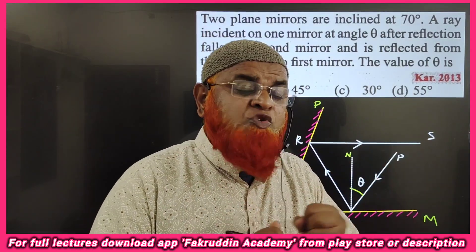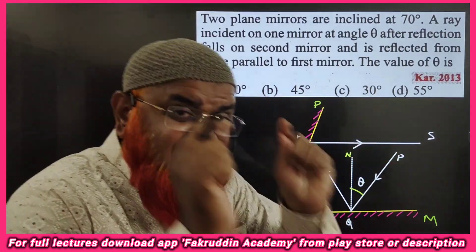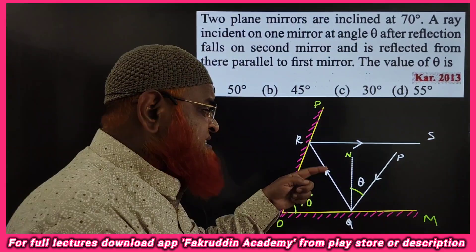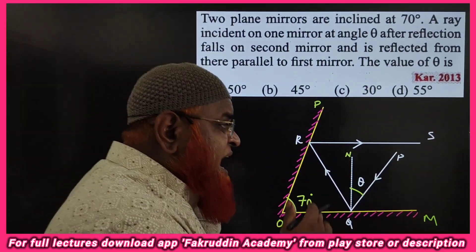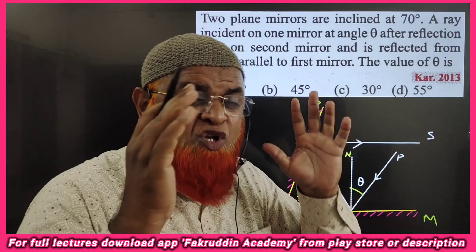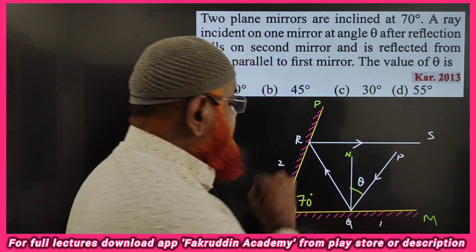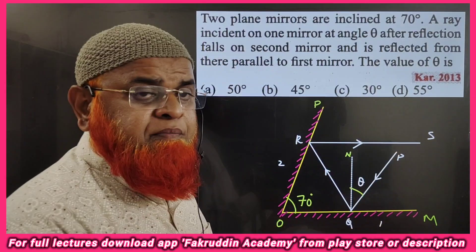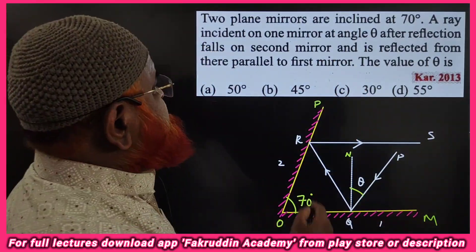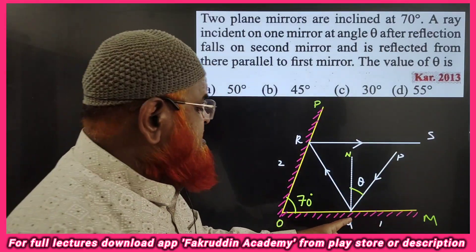This is a previous year question regarding reflection. You can see two mirrors, OM and OP. A light ray enters along PQ, strikes the first mirror, reflects, strikes the second mirror, reflects again, and comes out along RS. So PQ and RS represent the direction of the light ray. The light ray is incident on the first mirror with an angle theta, takes double reflections, and comes out. The question states that the reflected ray RS is parallel to the first mirror OM.